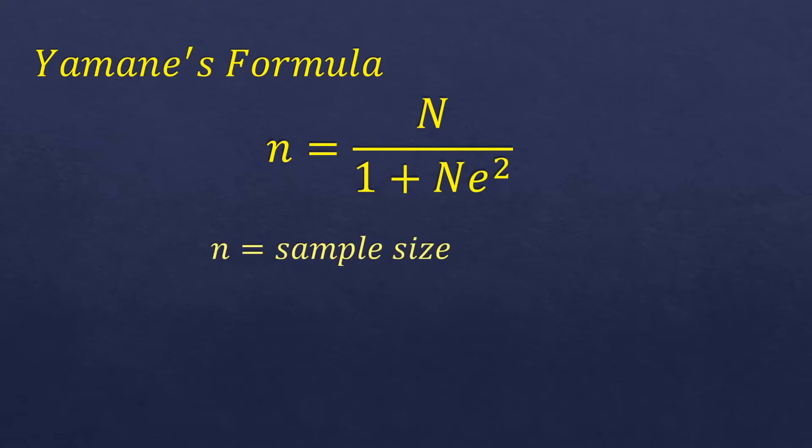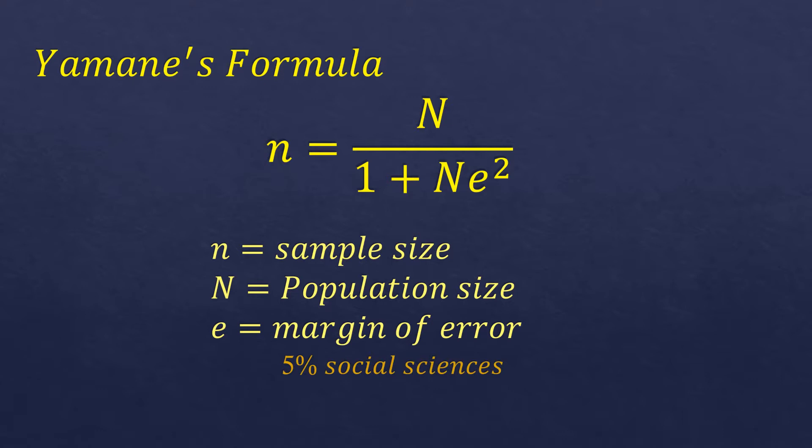Where the small n is the sample size, the capital N is the population size, and the e is the margin of error. The margin of error can be either 5% for social sciences studies or 1% for medical studies.